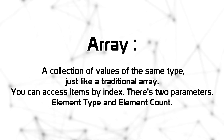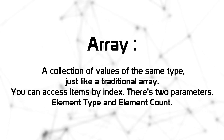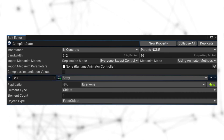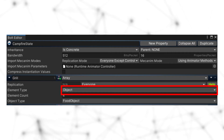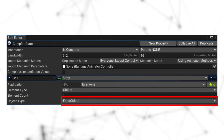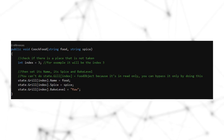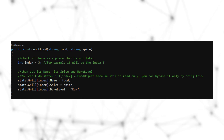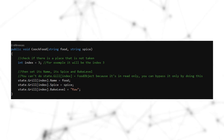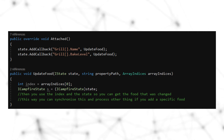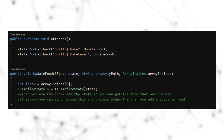Now let's go to array type variables. An array is a collection of values of the same type, accessed by index, just like a traditional array. There are two parameters: element type and element count. For our campfire example, let's add a grill as an array with element type 'object', element count 4, and object type 'food object'. To update the array in code, we need the index we want to update and then select a property of the object. You cannot assign the object or the array directly because it is read-only.